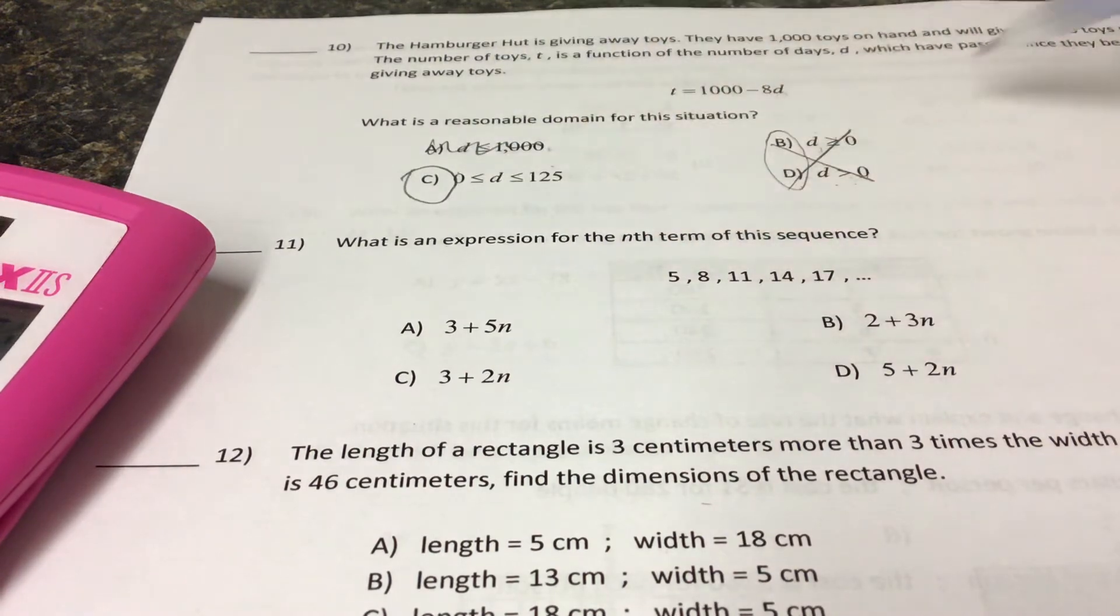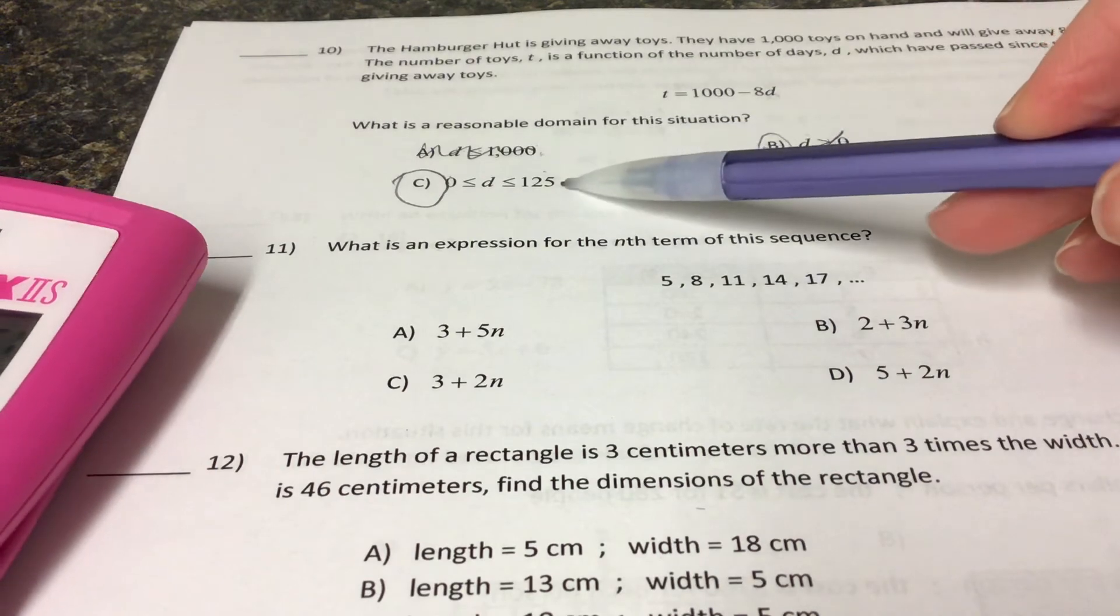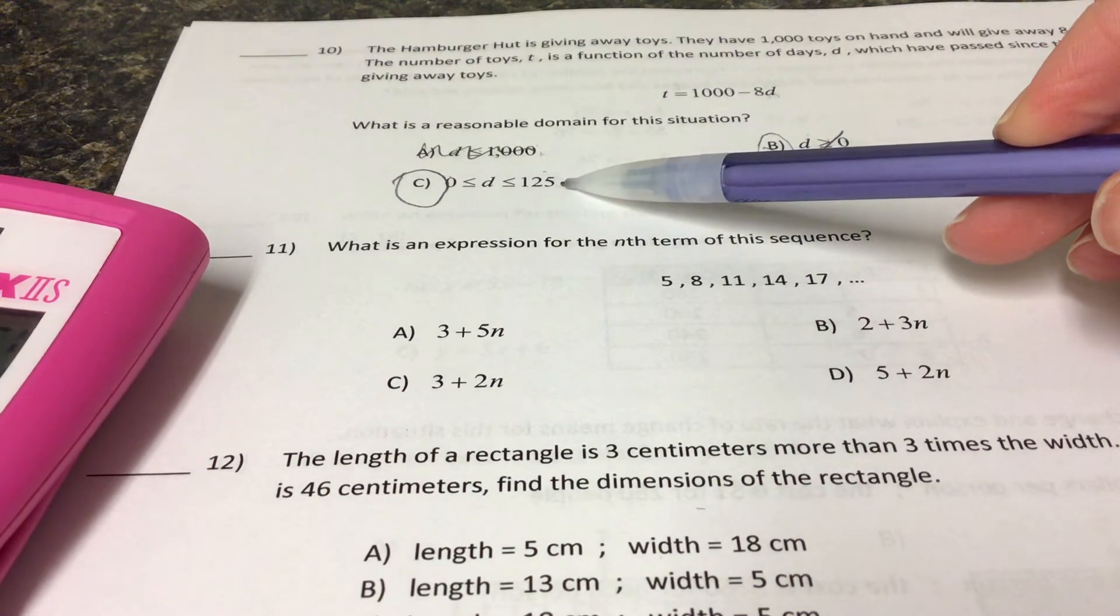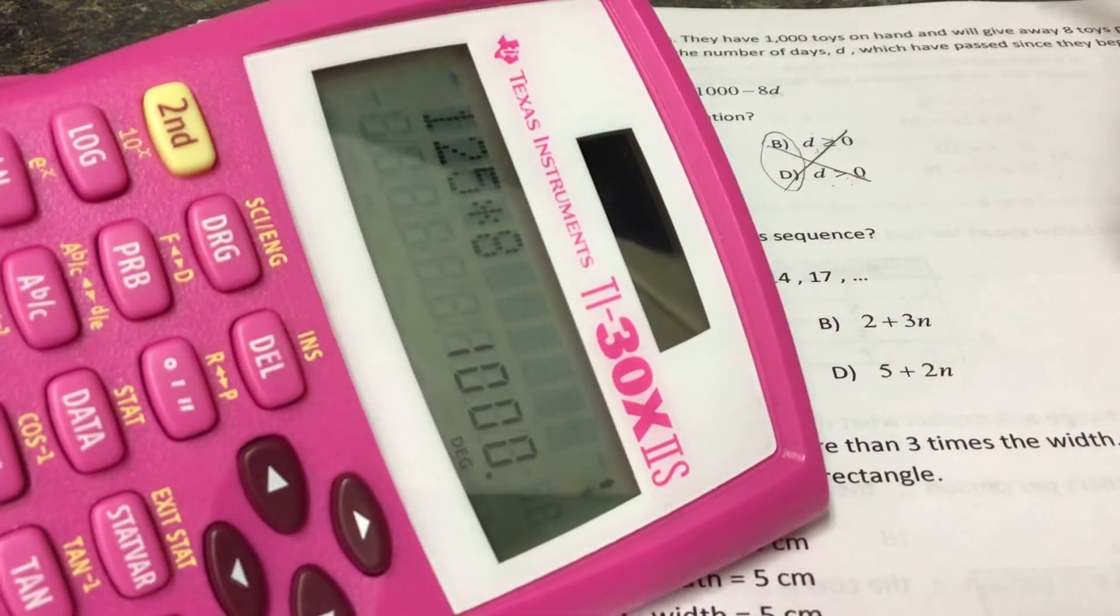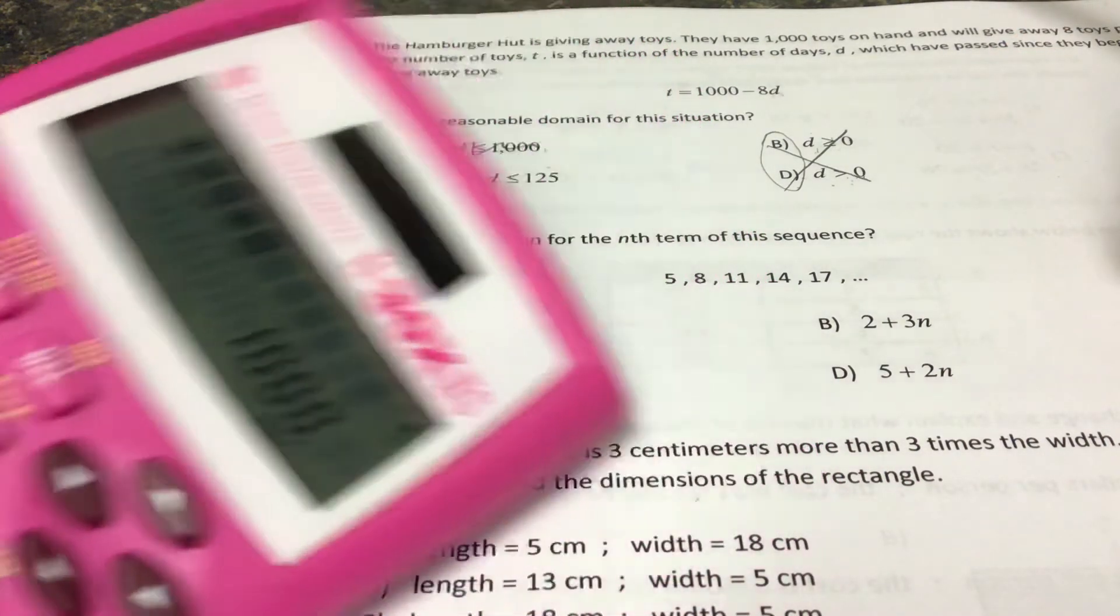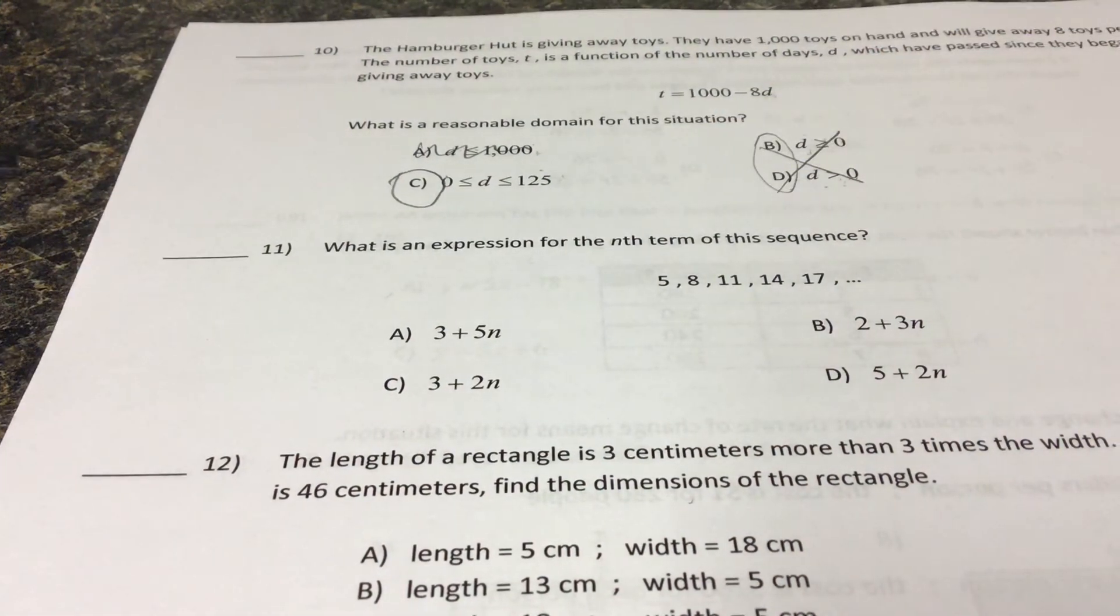Our best choice for the domain here is zero to 125 because after 125 days, if I give eight toys away per day, I'm going to be at my thousand toys. So our answer here is C. Next question.